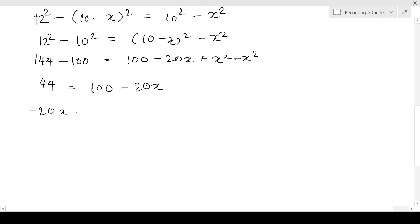So minus 20X is equal to 44 minus 100 that is equal to minus 56. X is equal to minus 56 divided by minus 20, that is 56 by 20, that is 28 by 10, that is 2.8. That gives us X equals 2.8.